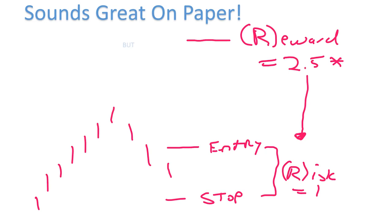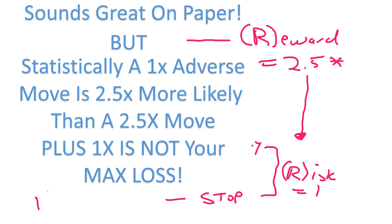Unfortunately, it sounds great on paper, but in reality it doesn't work that way. The world is a lot more complex, especially when it comes to trading. Statistically, a 1x adverse move — in other words, getting stopped out — is 2.5 times more likely than a 2.5x move in your favor. Plus, 1x is not your max loss. If you're risking 1 point and the stock gaps down 10 points tomorrow, you've now lost 10x.